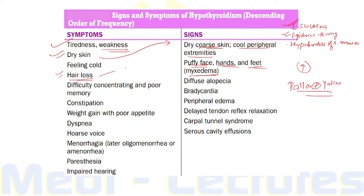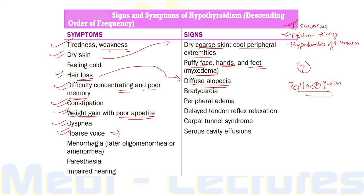There is hair loss with diffuse alopecia and thinning of the lateral one-third of the eyebrows. There is difficulty concentrating and poor memory in hypothyroidism; on PET scan there is decreased regional activity in the amygdala, hippocampus, and anterior cingulate cortex, which is reversible with levothyroxine treatment. Patients are usually constipated and complain of weight gain even with poor appetite. Dyspnea and hoarseness of voice can occur due to increased accumulation of glycosaminoglycans in the vocal cords.